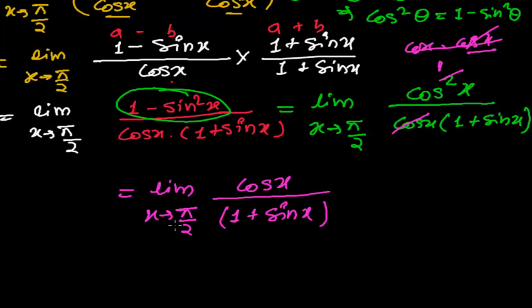So limit when x tends to π/2, we get here cos x whole divided by 1 plus sin x. Now if we plug the value of x here, then we will not get any undefined value because if you plug the value of 90 here, then sin 90 is exactly 1. So it's easy to solve now. So just plug the value...